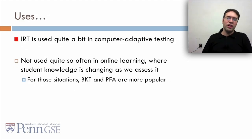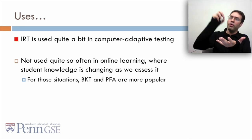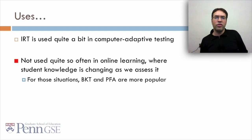So IRT is used quite a bit in assessment. In the online world you see it in computer adaptive testing, testing that tries to infer what a student knows and tries to give items the right level of difficulty and discriminability to better pinpoint what the student knows. It's not used quite so often in online learning where student knowledge is changing as we assess it, and IRT doesn't have any provision for that. For those situations, BKT and PFA are more popular.